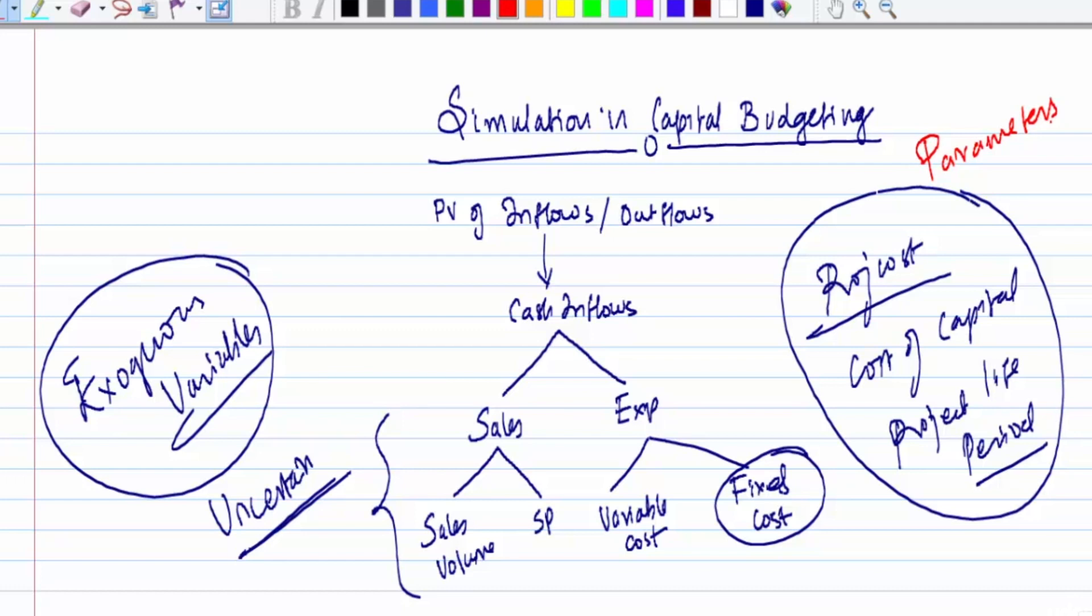The items which are going to change are called exogenous variables. In simulation, we will do simulation runs on these exogenous variables using probabilities and cumulative probabilities, and then develop what is known as a random class interval.